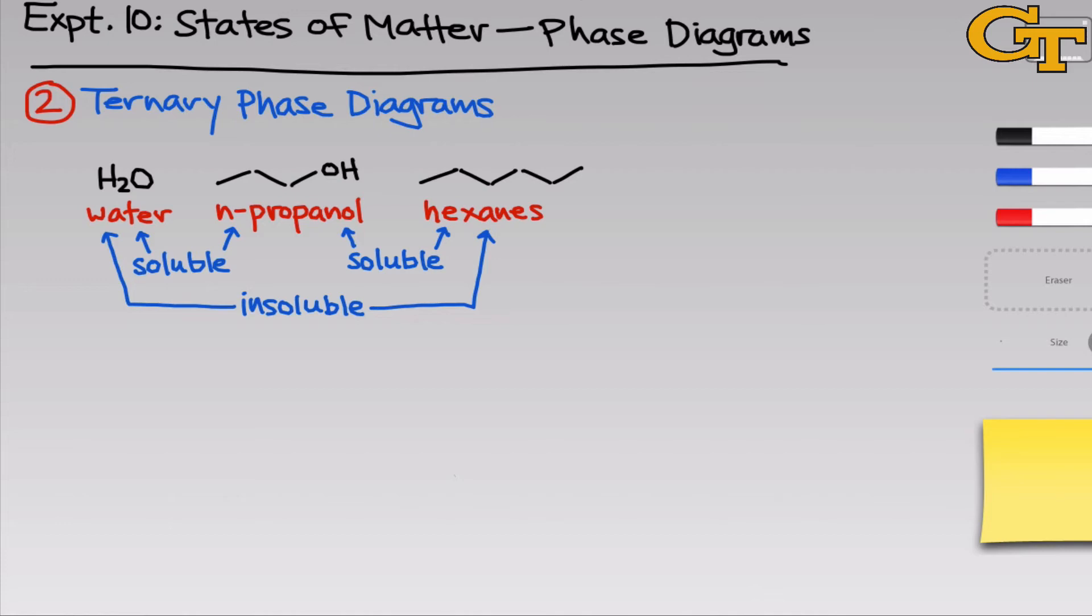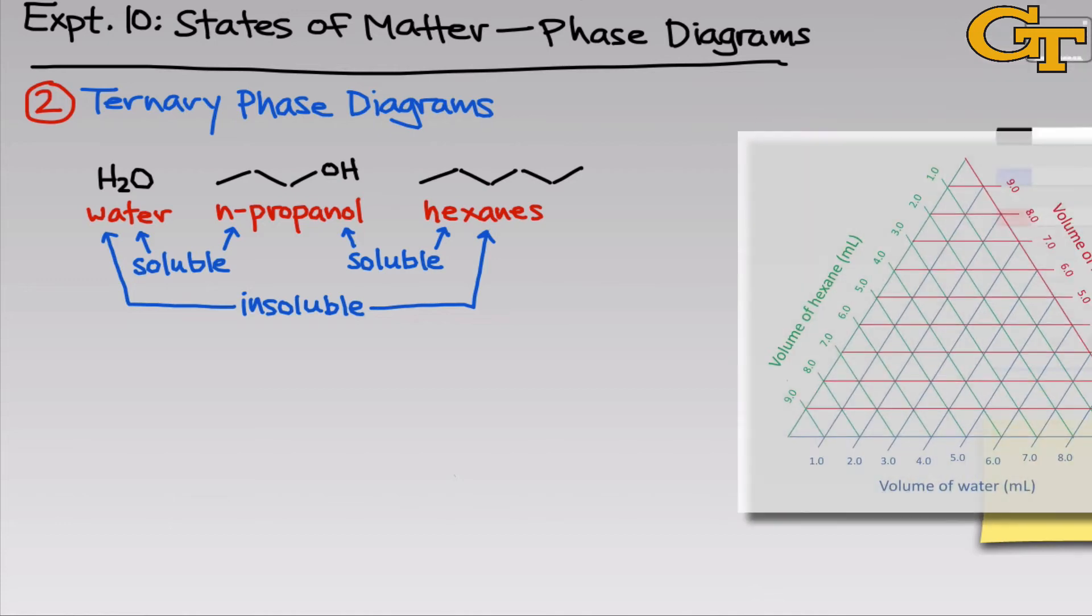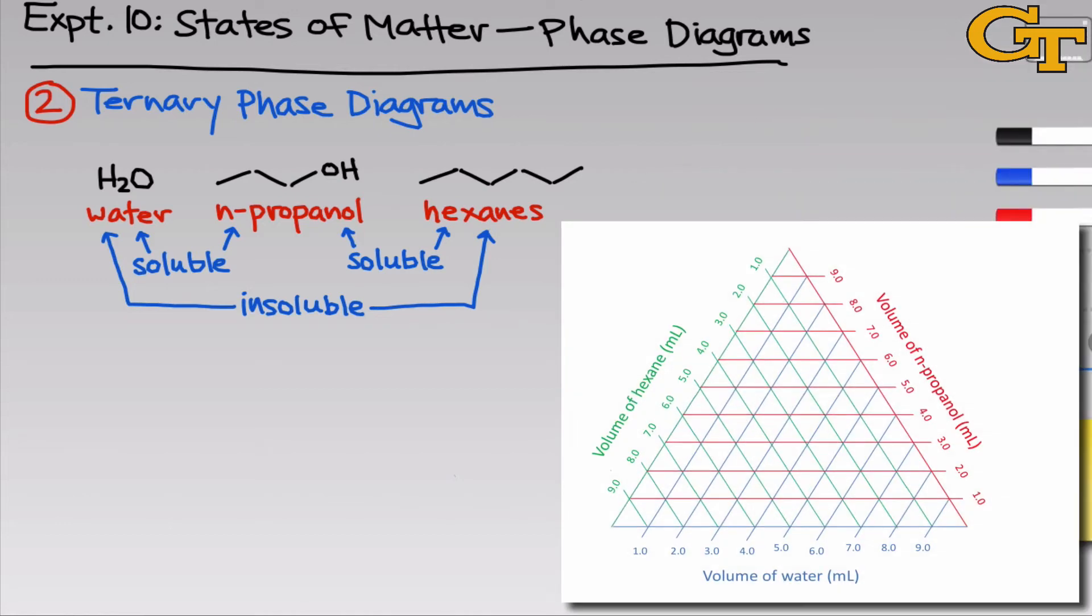And to document this process, we're going to use a ternary phase diagram, which is the kind of monstrous-looking triangle that you see on the right-hand side of the screen. This triangle has three lines along the outside, and it's really important to understand what each of these lines is telling you.